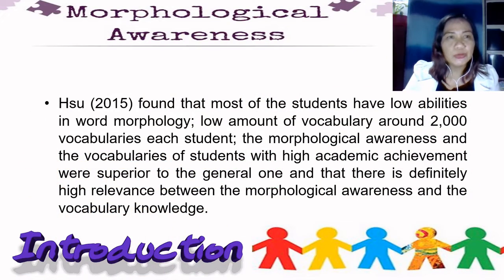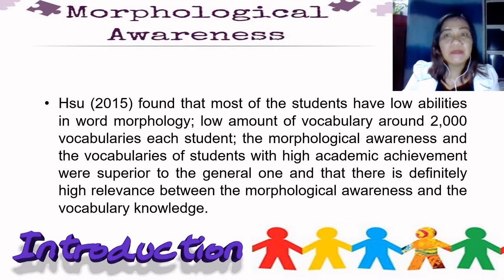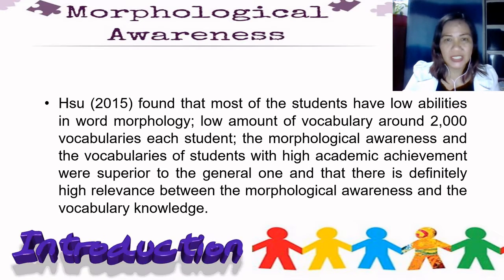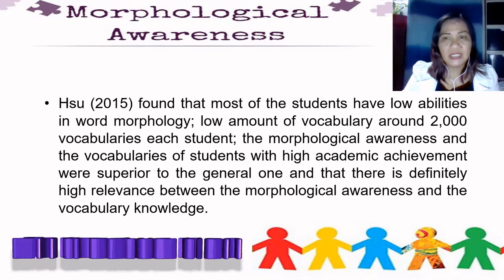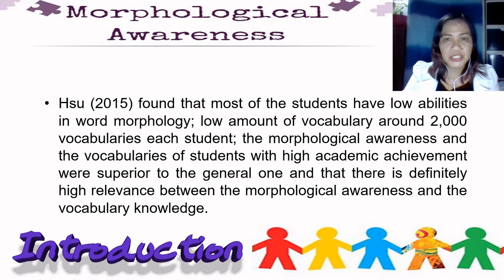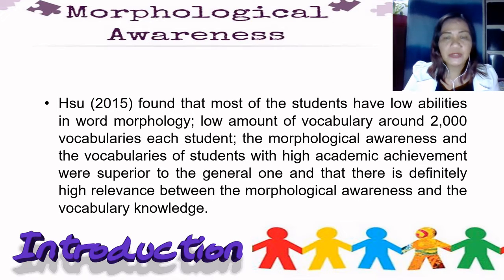Sue of 2015 found that most of the students have low abilities in word morphology and a low amount of vocabulary, around 2,000 vocabularies per student. The morphological awareness and vocabularies of students with high academic achievement were superior to the general ones, and there is definitely high relevance between morphological awareness and vocabulary knowledge.